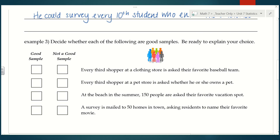For example three, we're going to decide whether each of the following are good samples. The first one: every third shopper at a clothing store is asked their favorite baseball team. In my opinion, I think that is a good sample — it doesn't seem biased in any way. Just because they're shopping at a clothing store doesn't mean we're going to sway their opinion. Asking every third shopper gives me a variety of people.